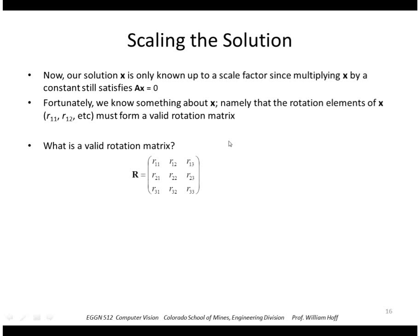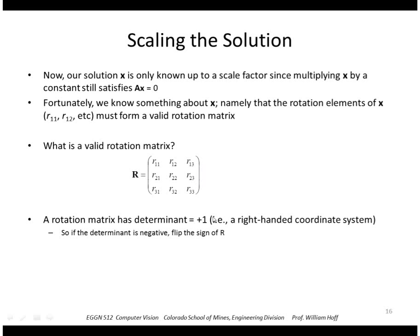What is a valid rotation matrix? Well, it has a determinant equal to plus 1. Plus 1 indicates a right-handed coordinate system. Negative 1 would be a left-handed coordinate system. So we check the determinant, and if it's negative we change the sign of every element of A to make sure it's a right-handed system.